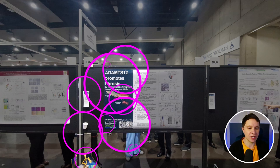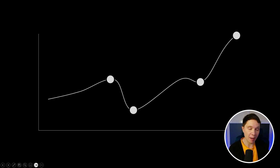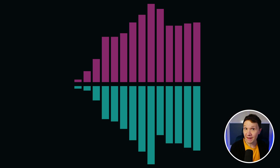The easiest way to use this knowledge in the science communications that you design — the posters, the slides, the data visualizations — is just to make one important thing pop out by giving it the most contrast. But what about this graph?